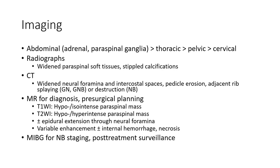Imaging locations: abdominal, adrenal, paraspinal ganglia, then thorax, pelvic, cerebral. Neuroblastoma shows widened paraspinal stripe on plain film. CT shows widened lateral, pulmonary, and intercostal spaces, with vertebral erosion. Adjacent to spine — GN, GNB, or bony destruction.